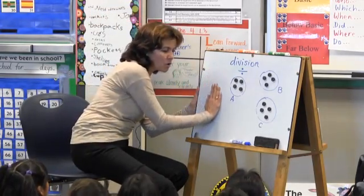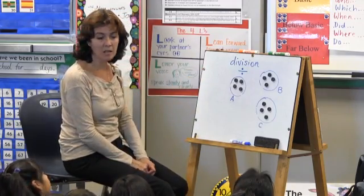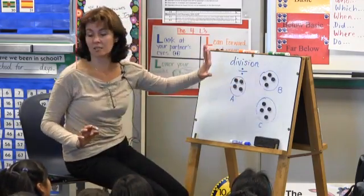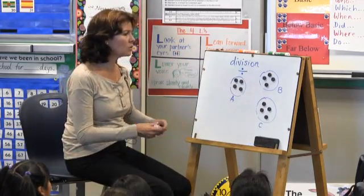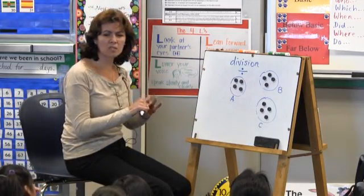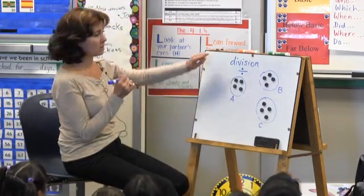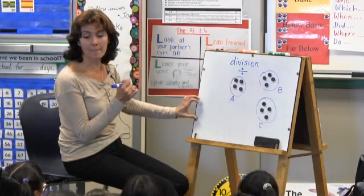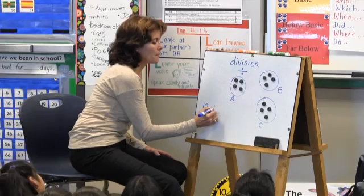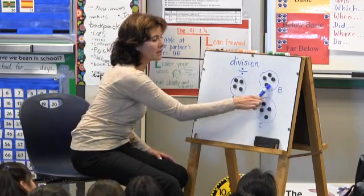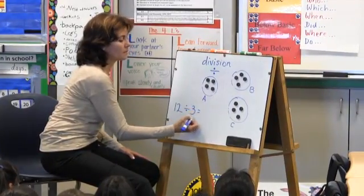Do we have any more cars left over? No, because they all went to those garages and they're all parked nicely. So, how many cars did we start with? Twelve. I'm going to write the division number sentence. Twelve divided by how many garages? Three equals four.